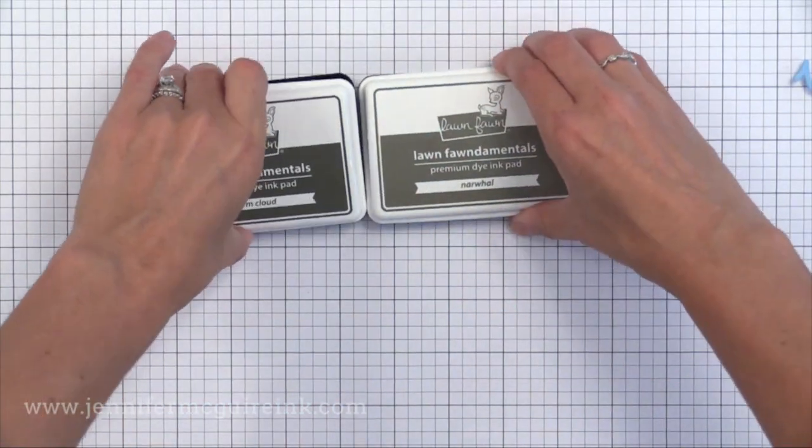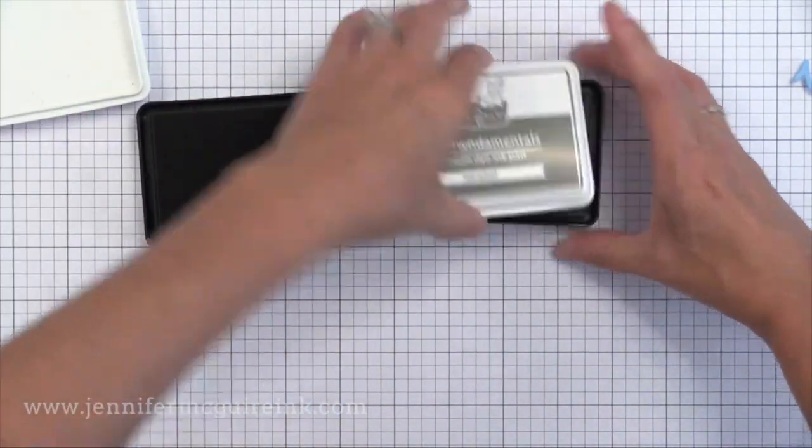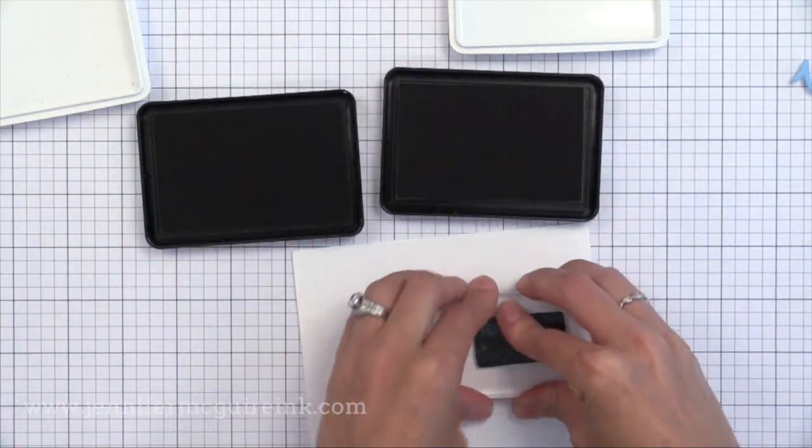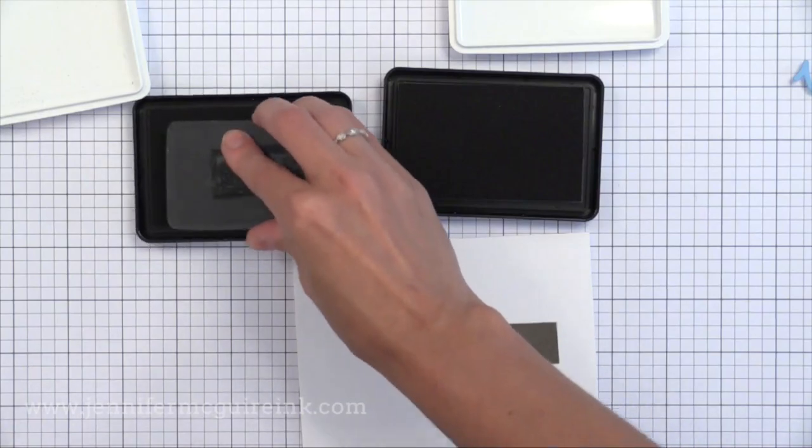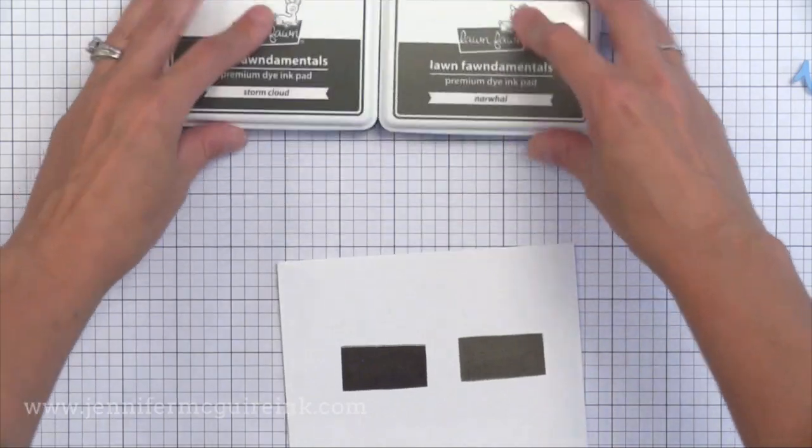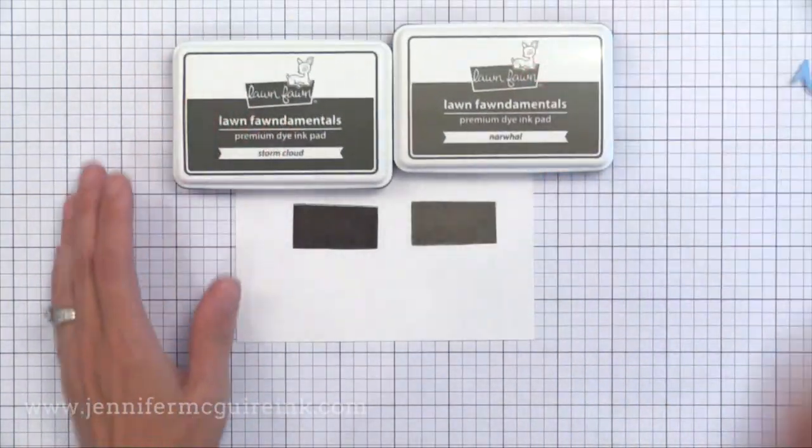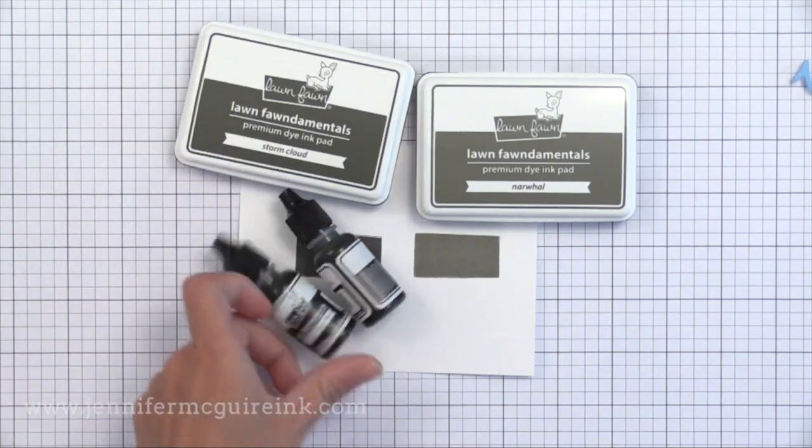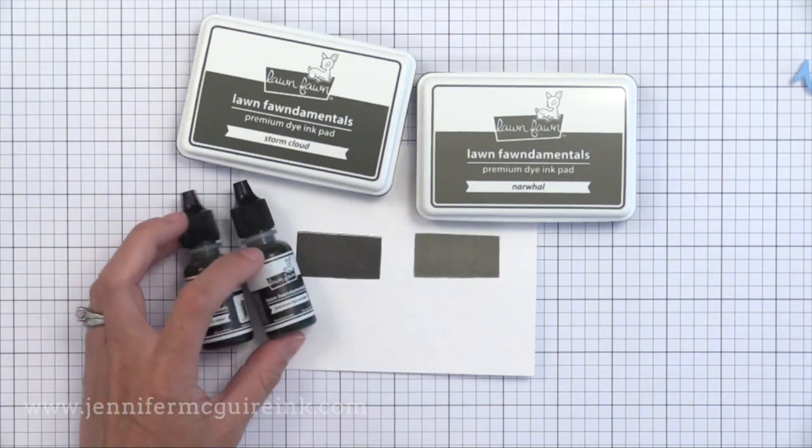There are also two ink colors in this release. We have the Storm Cloud and the Narwhal. The Narwhal is the first one I'm doing here. It's a gray that kind of has a brown tone to it and Storm Cloud is more of a true gray. Almost black but not quite. I think I'll be reaching for that Storm Cloud a lot. I think it's a beautiful dark gray color and they do have re-inkers available for these.